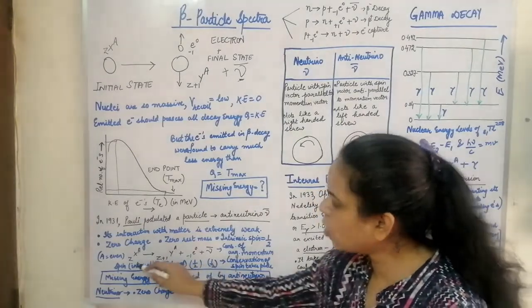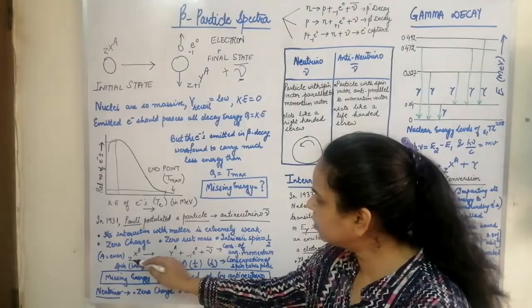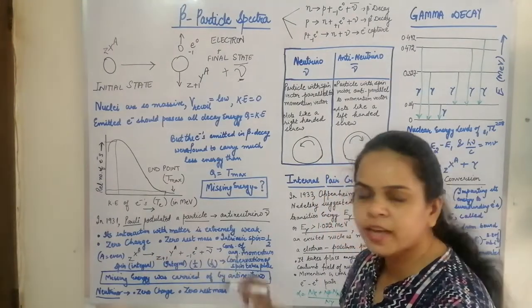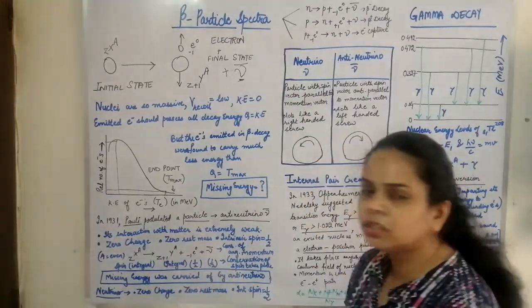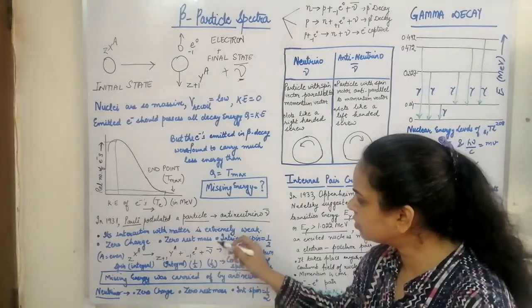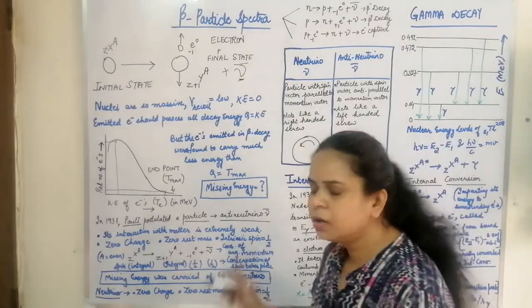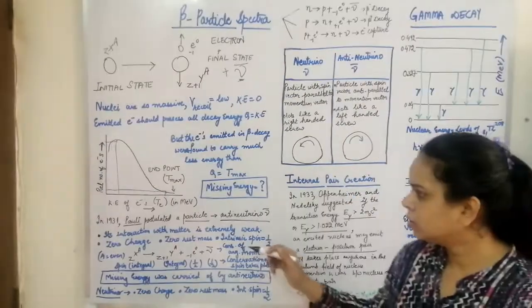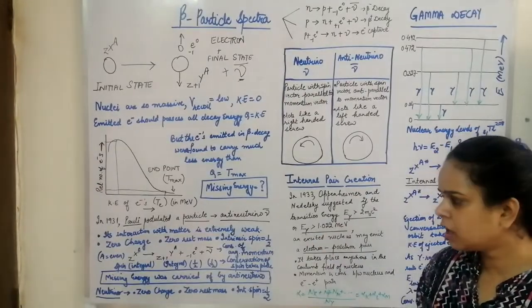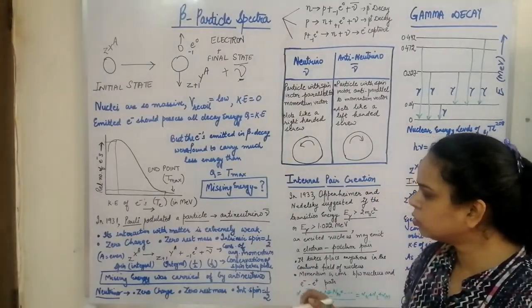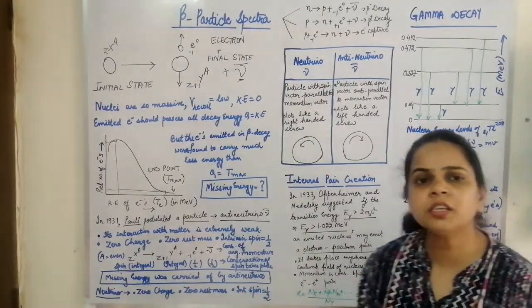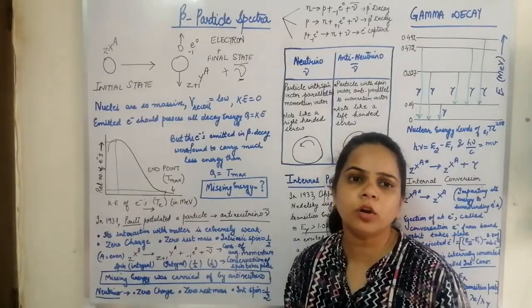Due to the zero charge of the anti-neutrino, the atomic number is conserved — on the left side charge is Z, on the right side Z+1 and -1 gives Z. Since its rest mass is also nearly zero, the mass numbers are also conserved. So conservation of atomic number, mass number, and charge are all satisfied by the addition of the anti-neutrino. Its intrinsic spin of one half can also satisfy conservation of angular momentum.